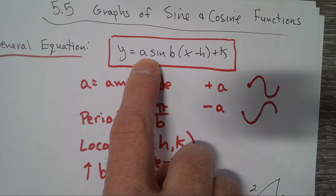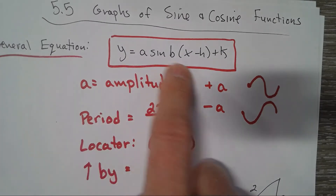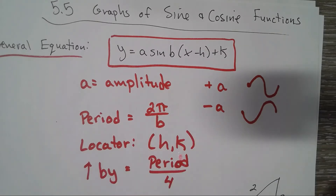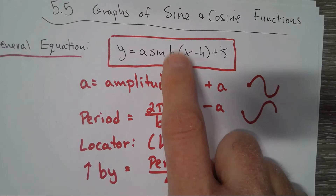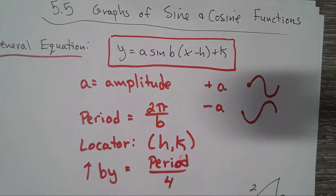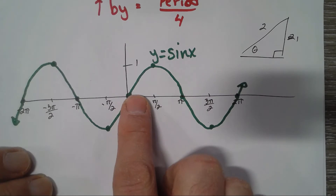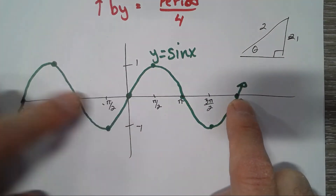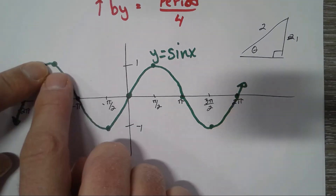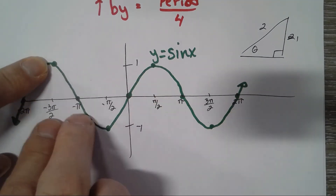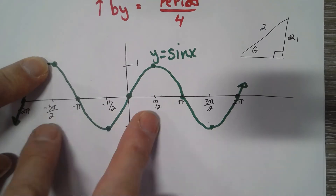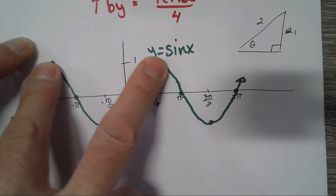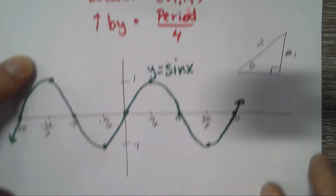The parameter 'b' has to do with the period, and it's always two pi over b for sine and cosine. Whatever that number is, you divide two pi by it to get the period. The period is the amount of time it takes to complete one cycle. For example, from one point all the way to the corresponding next point on the x-axis is two pi — it always takes two pi to complete a cycle.